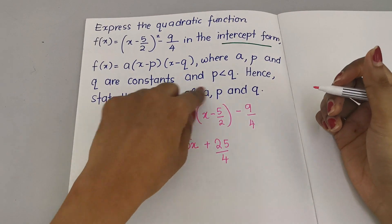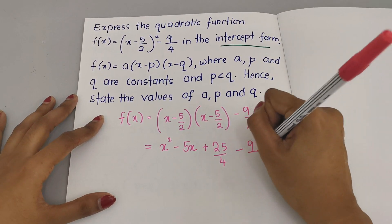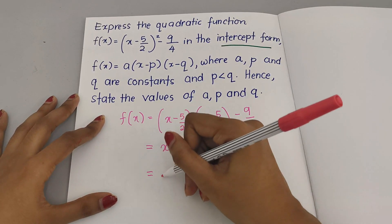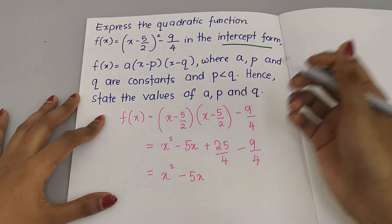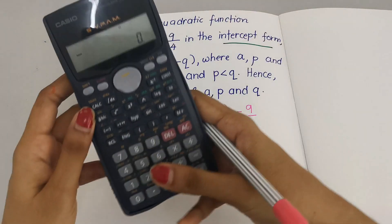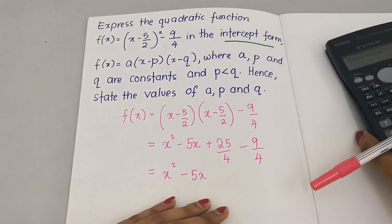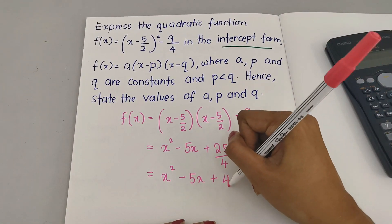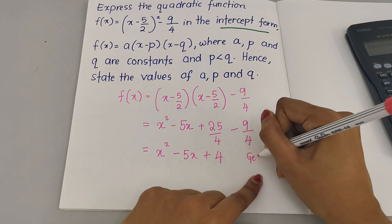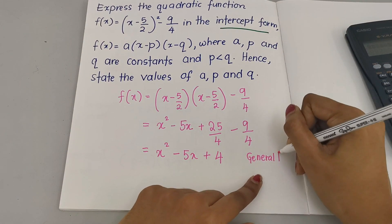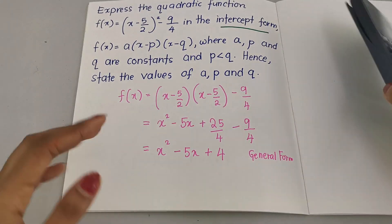This is after expansion - I've actually skipped the step here. Minus 9/4, so here we obtain x² - 5x/2 + 25/4 - 9/4, which gives us x² - 5x/2 + 4. We already got the general form. This is the general form.